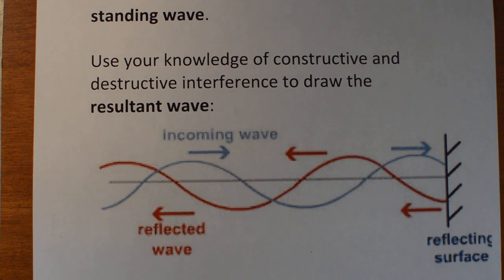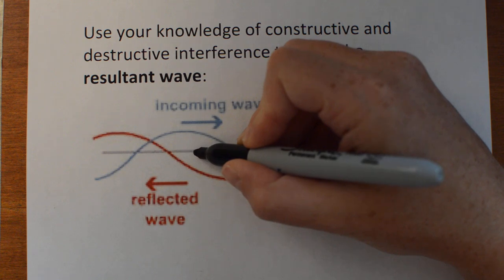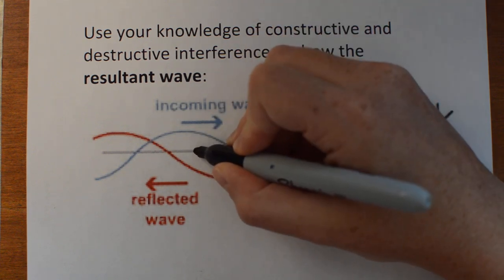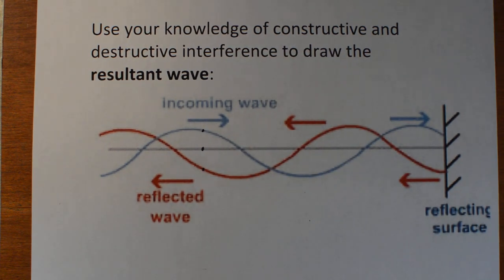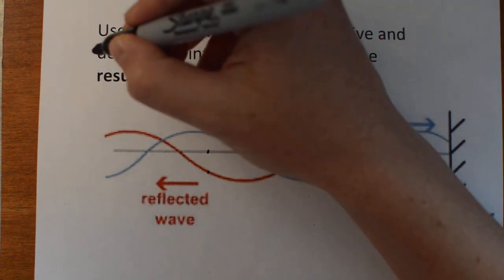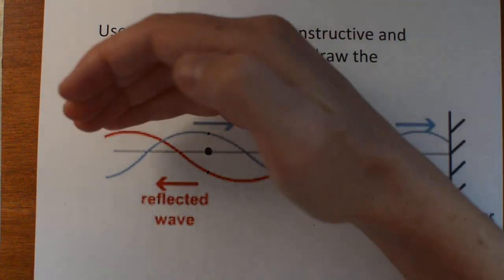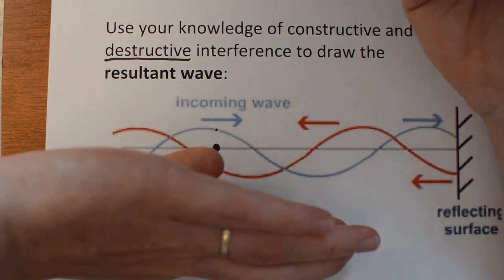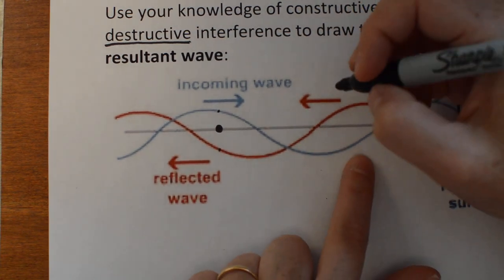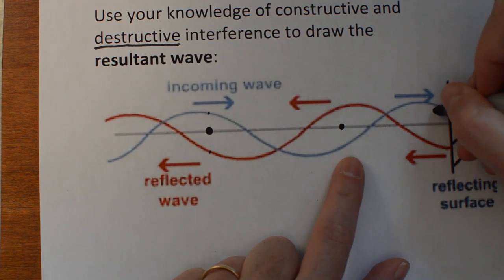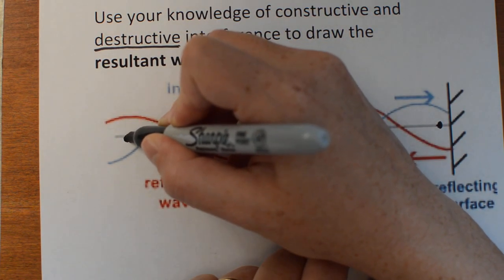What that wave looks like is: everywhere where the incoming wave and the reflected wave are the same distance above and below equilibrium — say right here, where the incoming wave is the same distance above equilibrium as the reflected wave is below equilibrium — that's going to cause destructive interference right there, and they will completely cancel each other out. So as the incoming wave goes this way and the reflected wave goes that way, they cancel out and you get nothing there — no wave at all. That happens again in a few places.